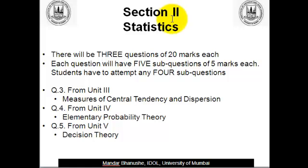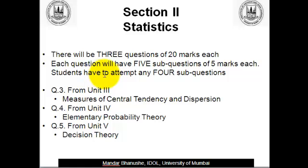In Section 2 Statistics, there will be 3 questions of 20 marks each. Each question will have 5 sub-questions of 5 marks each, and students have to attempt any 4 sub-questions out of these 5. Questions 3, 4, and 5 will be from Units 3, 4, and 5 respectively.